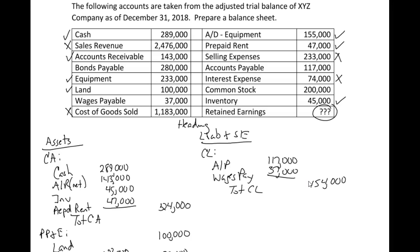The next step is our long-term liabilities, sometimes called non-current. The only one we have here is bonds payable — you can have premiums and discounts that go along with that, but we'll cover that in the bond chapter. Bonds payable was $280,000. So total liabilities are $280,000 plus $154,000, which equals $434,000.